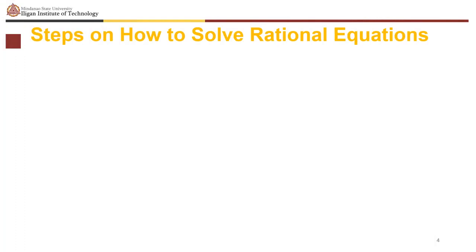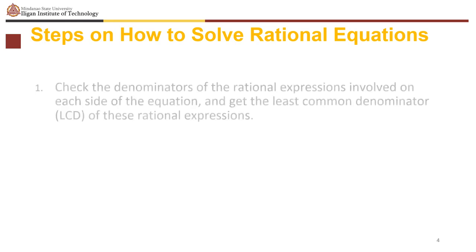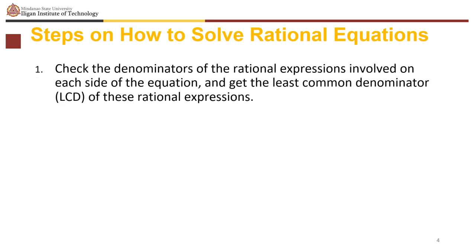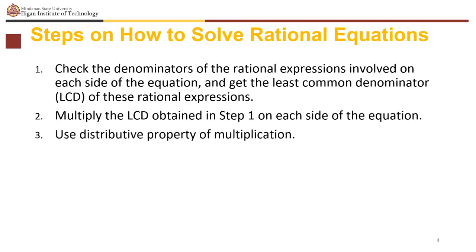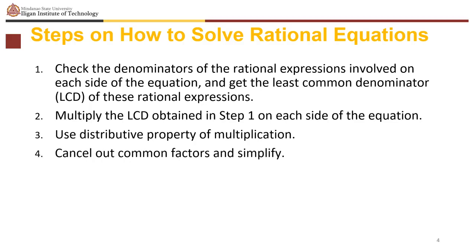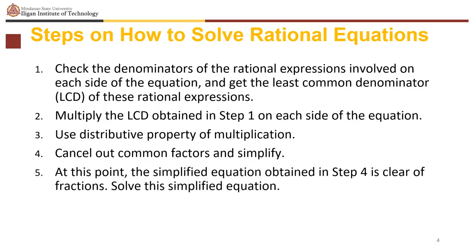The steps to solve rational equations: First, check the denominators of the rational expressions involved on each side of the equation and get the least common denominator. Next, multiply the LCD obtained in step 1 on each side of the equation. Then use the distributive property of multiplication. Cancel out common factors and simplify. At this point, the simplified equation is clear of fractions — solve it.